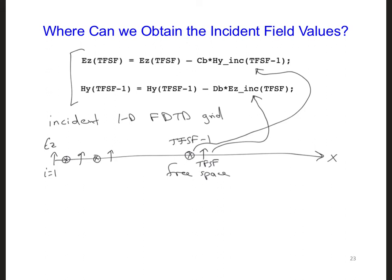Take a moment and write an outline of what you think the time-stepping loop should look like in your 1D total field scatter field code that includes a one-dimensional incident grid.